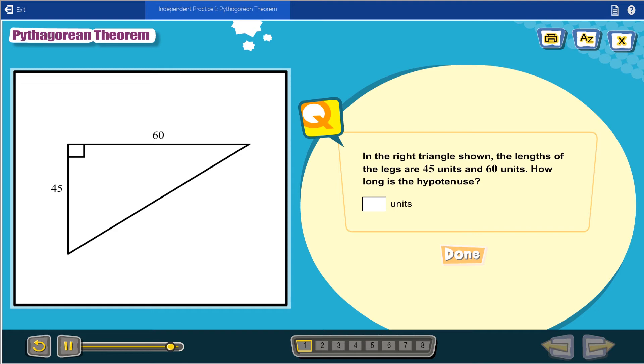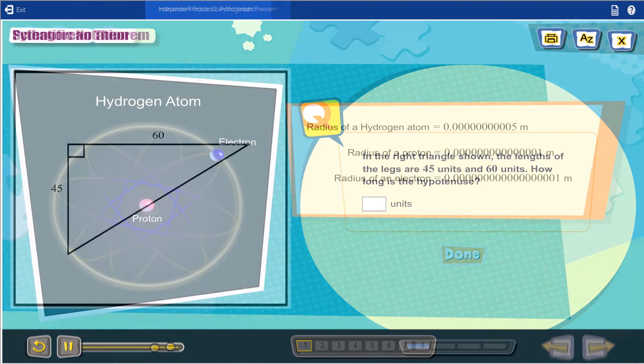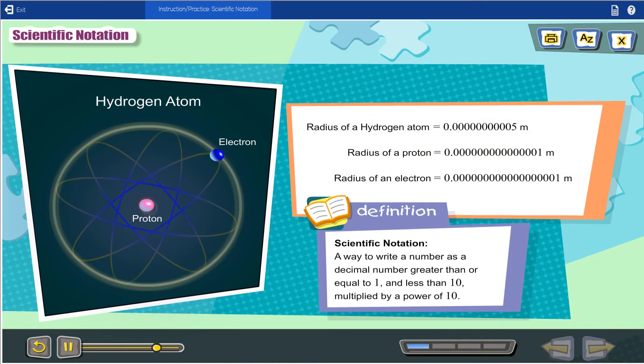Let's go ahead and take a look at the final lesson featured in this video, which covers expressing numbers between 0 and 1 in scientific notation. Scientific notation is a way to write a number as a decimal number greater than or equal to 1 and less than 10, multiplied by a power of 10.